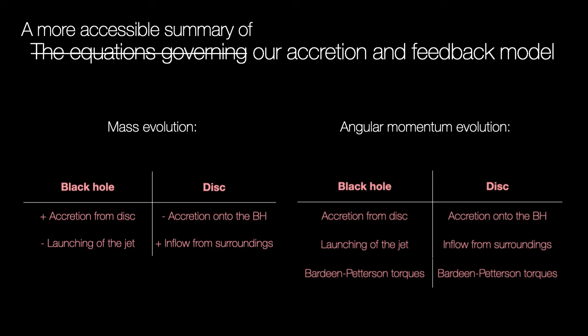Instead here's what I hope is a more accessible summary of the model. The black hole mass and angular momentum evolve due to accretion and jet launching.